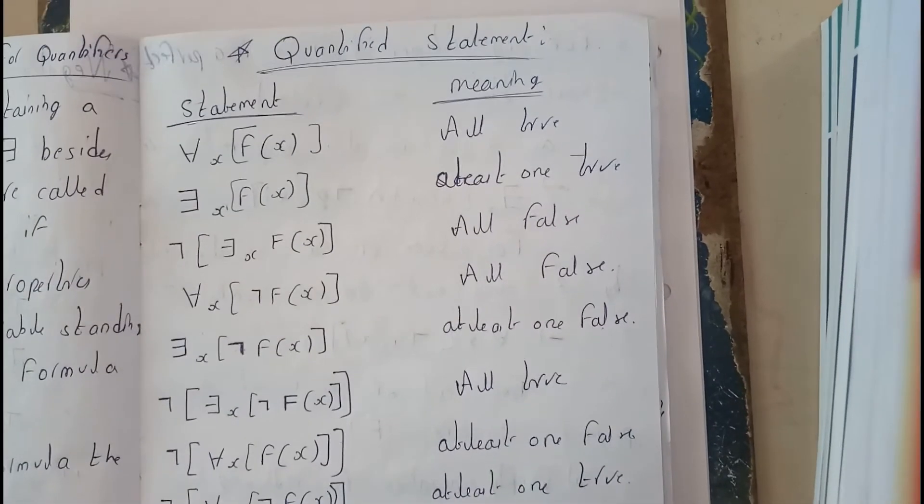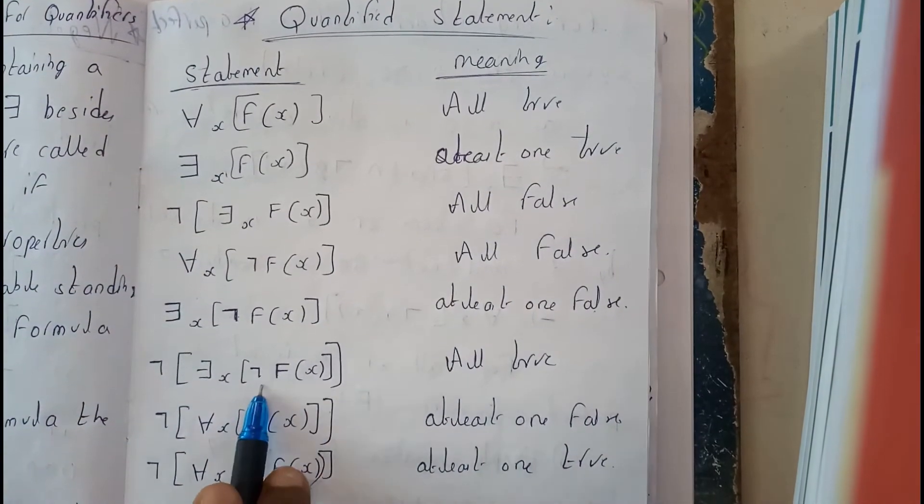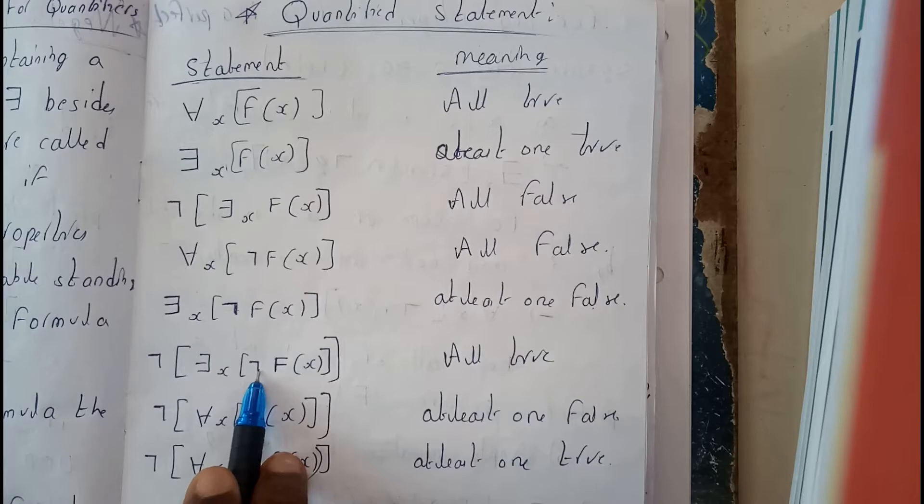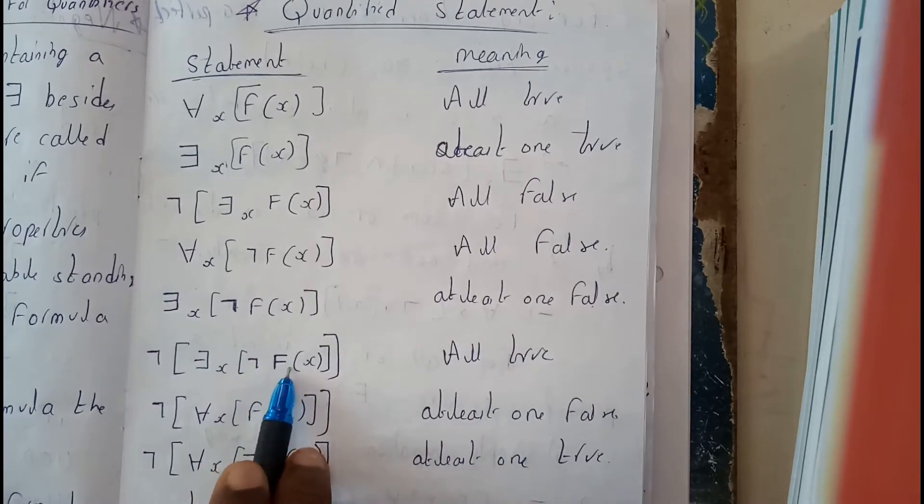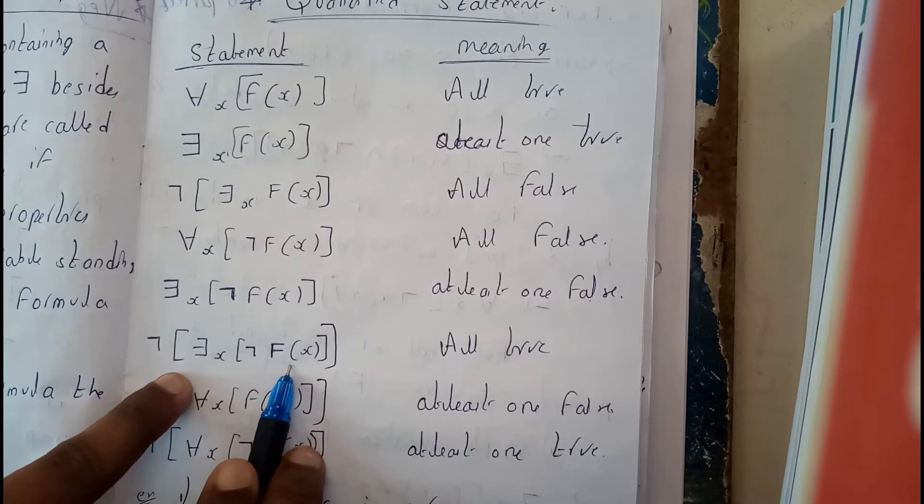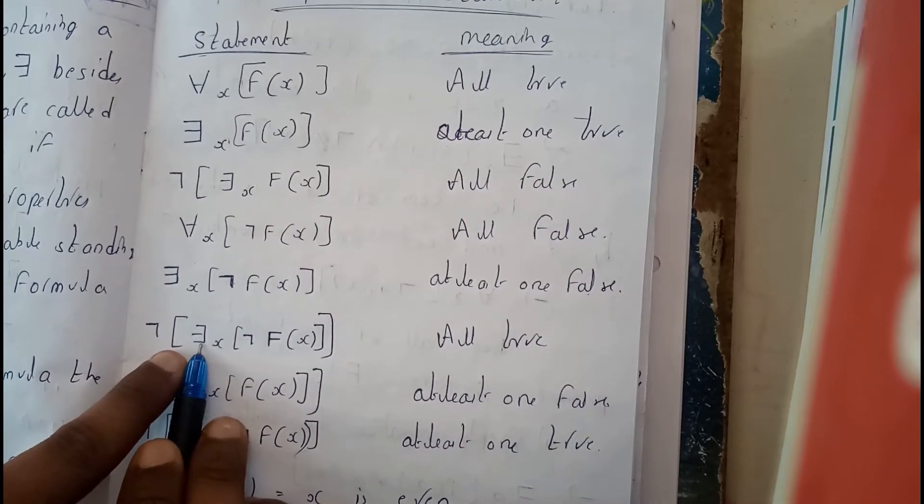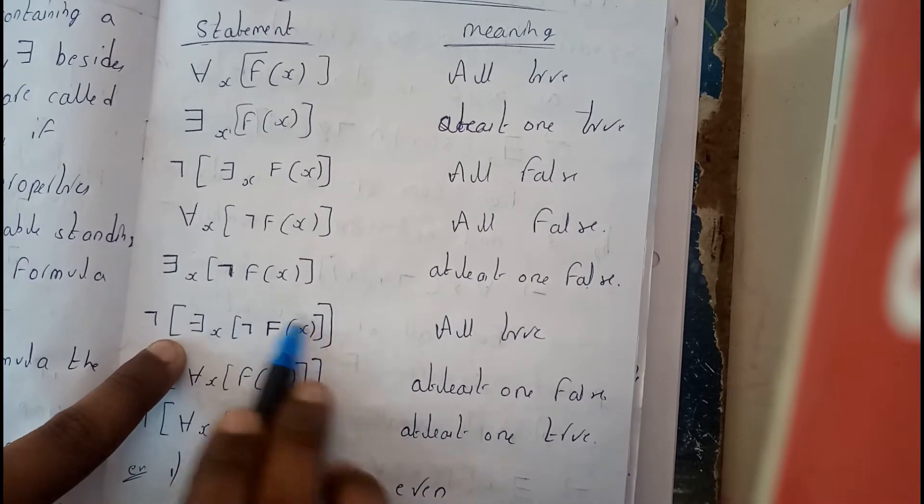There is nothing much complex guys. Just assume that the original statement f of x is true. Wherever you will be finding negation f, it is showing that it is false. Next coming outside, few are false and negation of that, negation of this will be true. Sorry, for all. And negation of this false will be true.